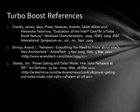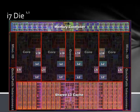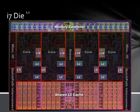Those are the references for the Turbo Boost section. Now passing it to Matt Burrow, who will talk about Nehalem's memory hierarchy. Hello, I'm Matt Burrow, and I'm going to discuss the i7's memory hierarchy. Here we can see the Nehalem i7 die, with regions not used for cache or memory grayed out. Each of the four cores contains its own L1 and L2 caches, and the L1 cache is split into separate instruction and data caches. There is also an L3 cache shared between the cores.